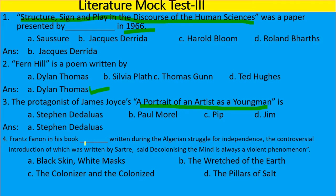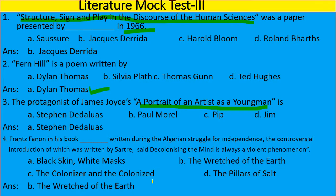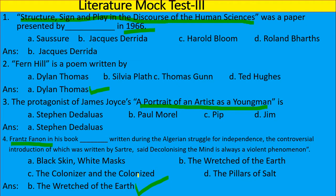Question 4: Franz Fanon, in his book written during the Algerian struggle for independence — whose controversial introduction was written by Sartre — said 'Decolonizing the mind is always a violent phenomenon.' Which is that work? Options: 'Black Skin White Masks', 'The Wretched of the Earth', 'The Colonizer and the Colonized', 'The Pillars of Salt'. The right answer is 'The Wretched of the Earth', a very important work of Franz Fanon, a post-colonial writer and critic.